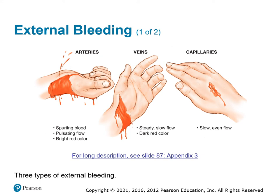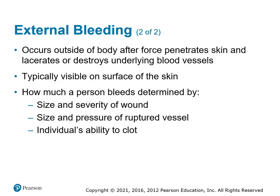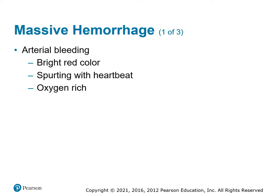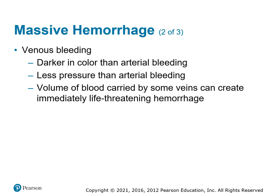It's important to stop both arterial and venous bleeding. Capillary bleeding is slow and even — like road rash — and usually stops on its own with direct pressure. External bleeding by definition occurs outside the body when something penetrates the skin and destroys underlying blood vessels. Assess the size and severity of the wound. Venous blood is darker and at low pressure, oozing or flowing rather than spurting, but it can be just as life-threatening as arterial bleeding.